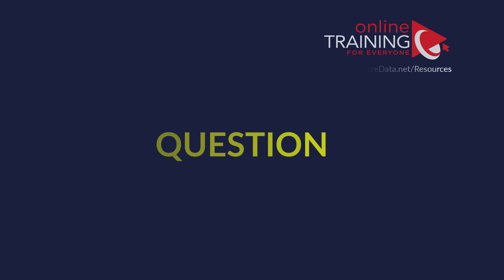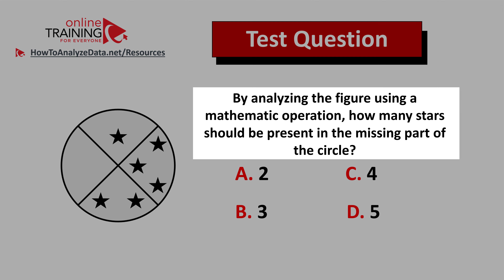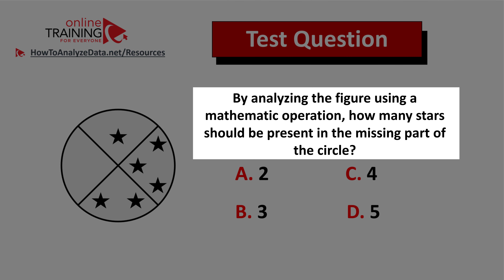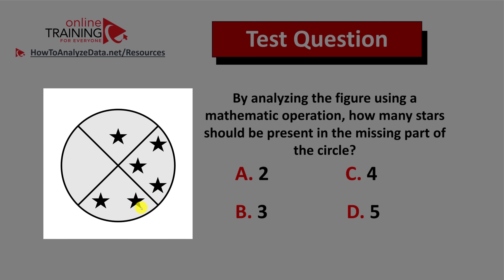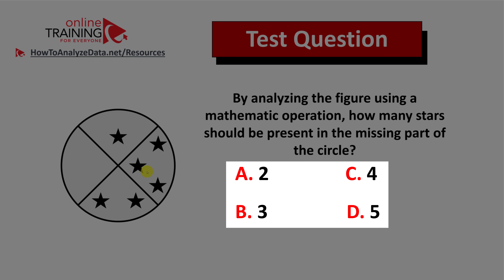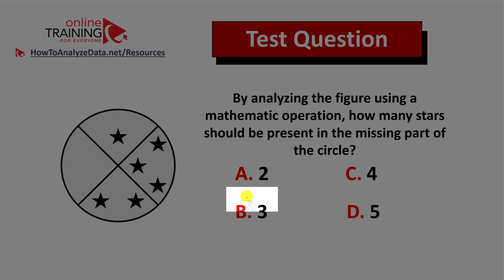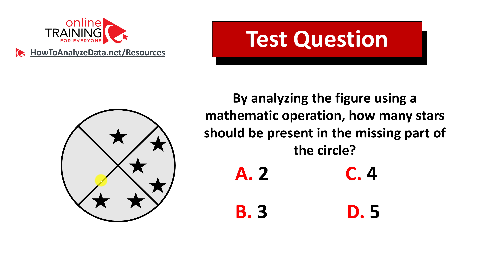Let's look at a tricky question which tests your knowledge of reasoning as well as math skills. By analyzing the figure using a mathematical operation, how many stars should be present in the missing part of the circle? You have a circle broken down into four equal parts. Three parts already have stars: one, two, and three stars. You have four different choices: Choice A, two; Choice B, three; Choice C, four; Choice D, five. Give yourself 10 to 20 seconds to see if you can come up with the answer.